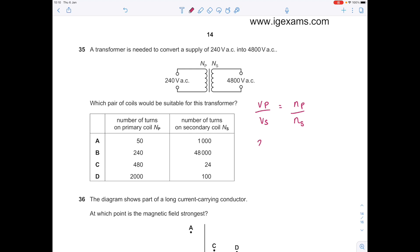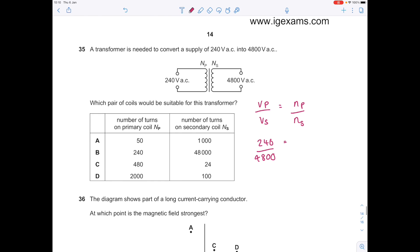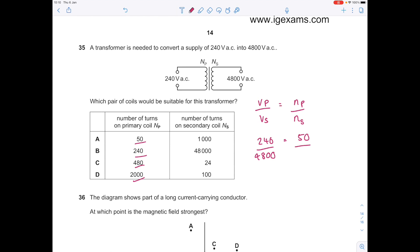We know that we've got 240 volts going in, 4800 coming out. I'm going to use these numbers here and sub them in. Let's put 50 over X and X equals 1000. I'm super lucky that matches, which means A is the answer straight away. I don't have to do more working.